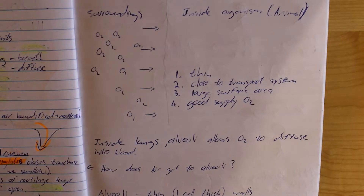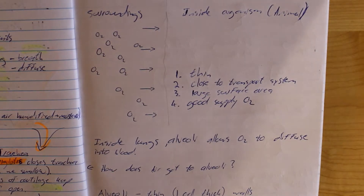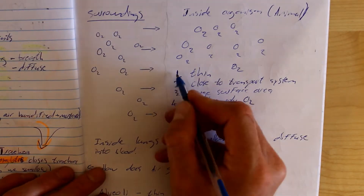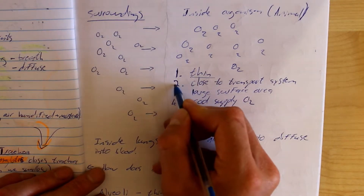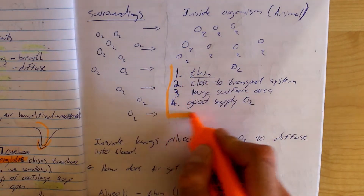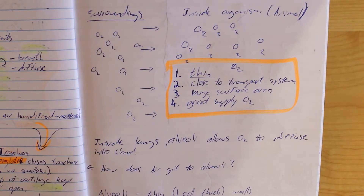We breathe in oxygen; in plants, oxygen simply diffuses in. There's plenty of oxygen on the outside, and this oxygen needs to cross a thin barrier to enter the organism. The barrier has the following properties: it has to be thin to allow oxygen to cross, it has to be close to the transport system such as the vasculature — the blood supply — it has to have a large surface area so plenty of oxygen can enter, and it has to have a good supply of oxygen. Alveoli have all these properties. They are only one cell thick, which makes them extremely thin and helps oxygen pass over the barrier really easily.